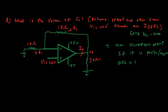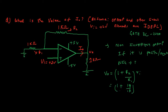For the non-inverting op-amp, the output voltage V0 is given by (1 + R2/R1) × Vi. Here, 1 + R2 is 1 kilo ohm and R1 is 1 kilo ohm, so this gives 2 times the input of 2 volts. Hence, Vout is equal to 4 volts.